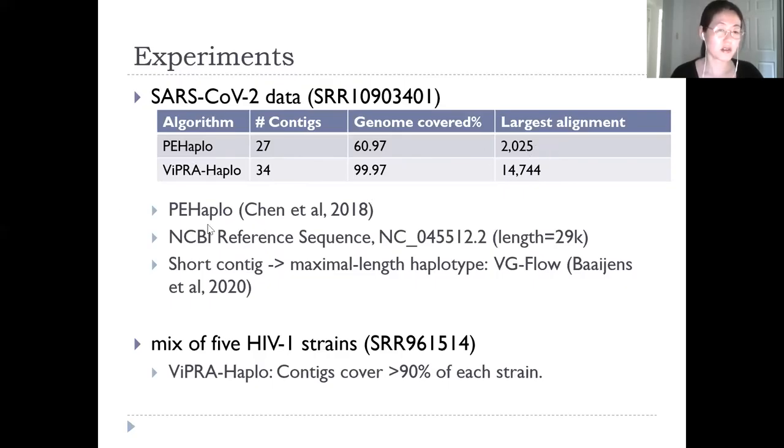However, contigs are still shorter than reference. We can use ViPRA-Haplo to reconstruct maximum length haplotypes from pre-assembled contigs by ViPRA-Haplo.